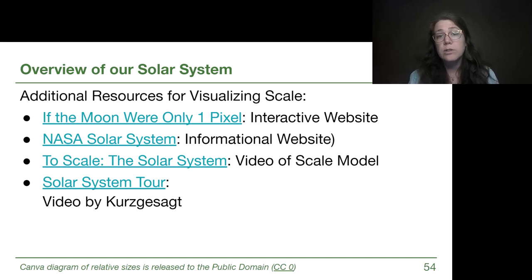Now if you are still struggling to think about these scales or you want different ways to be able to approach visualizing the scale, there's a bunch of useful websites for you that I encourage you to try at least one. I love If the Moon Were Only One Pixel. It's an interactive website that scrolls at the speed of light through the solar system. The NASA solar system website is a great informational website as well. And then To Scale the Solar System, that video is fabulous for showing us a scale model.